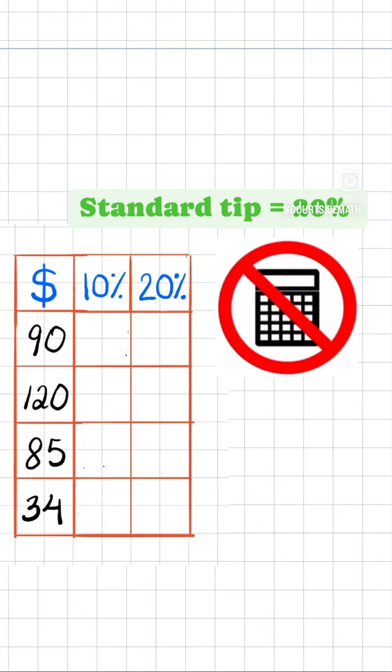So assuming we want to leave a standard tip of 20%, we're going to first review how to find 10% of a number.